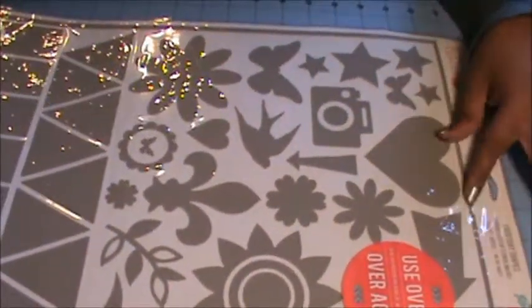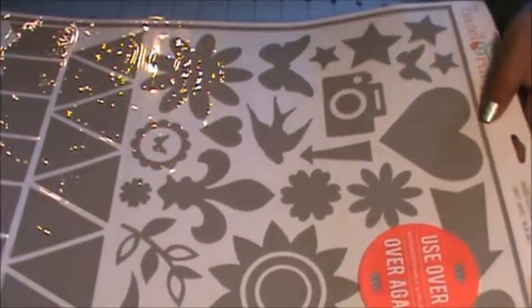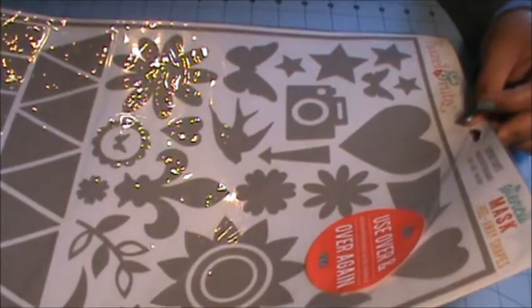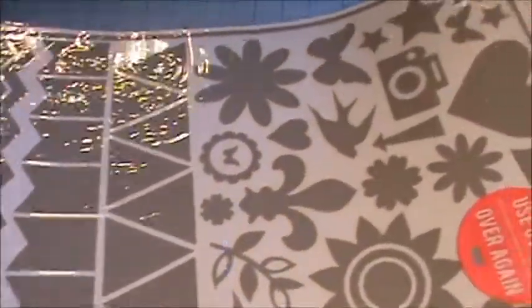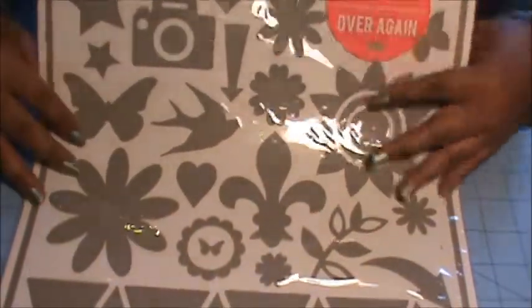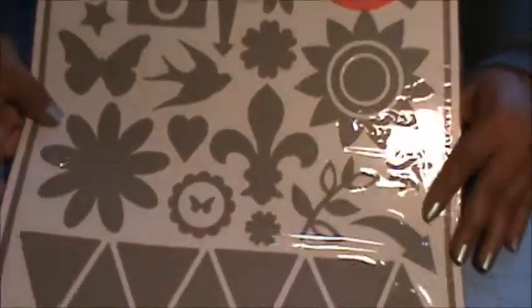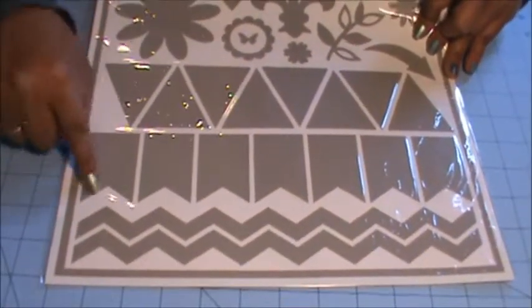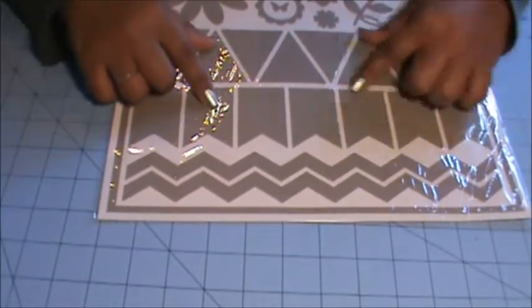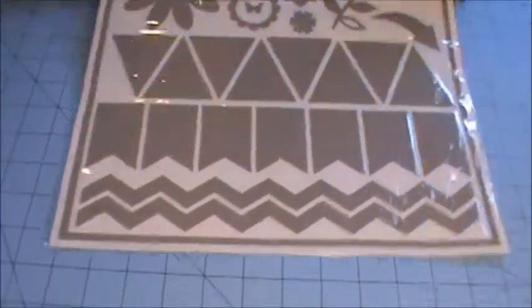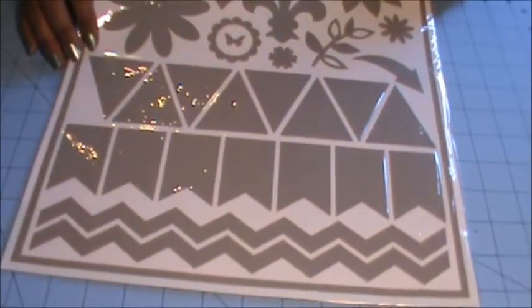So the last thing we got, which is not going to fit in frame because it's huge, is also from Hazel and Ruby. It's these stencil masks and there are 49 pieces in this set. So there are all kinds of things on here: there are hearts, stars, flowers, birds, leaves, arrows, these triangles, some banners, some chevron. They give you multiple of these, so if you're trying to do some design on your paper you have multiple ones to do. But this says you can use it over and over and over again, and that's really cool. I can't wait to play around with these.